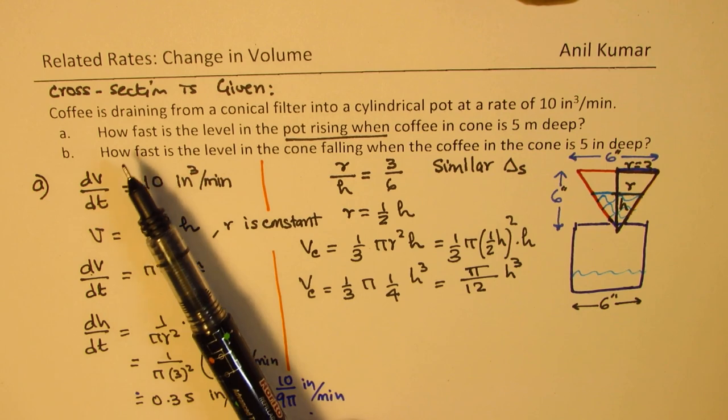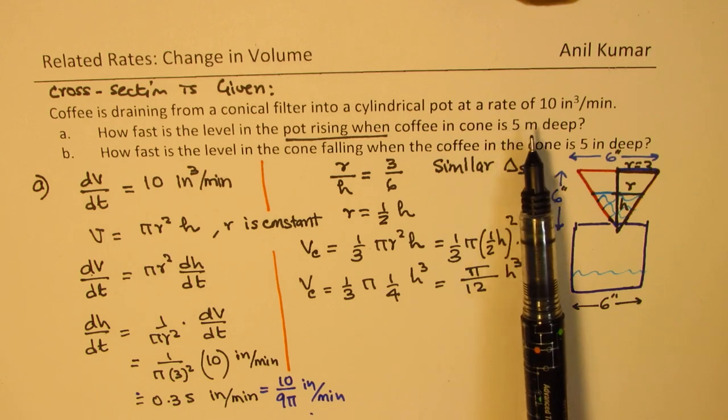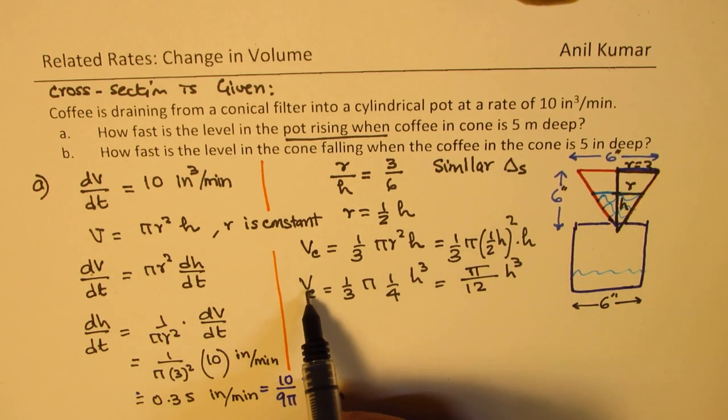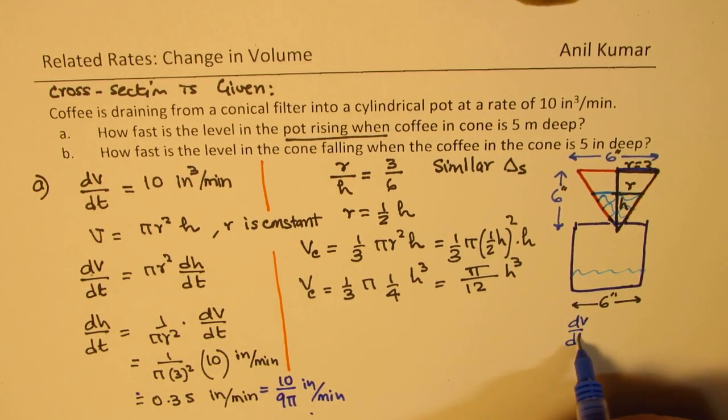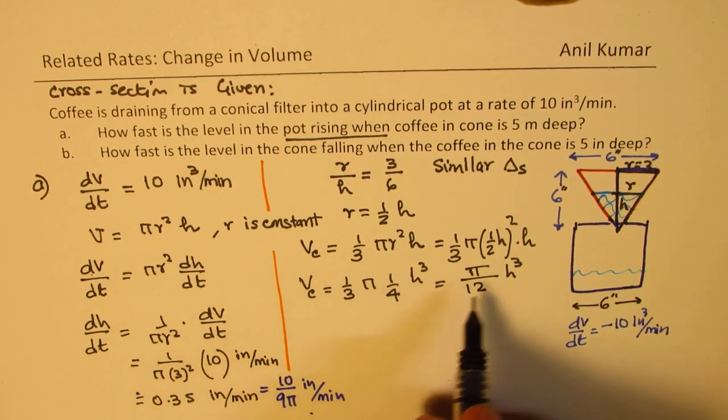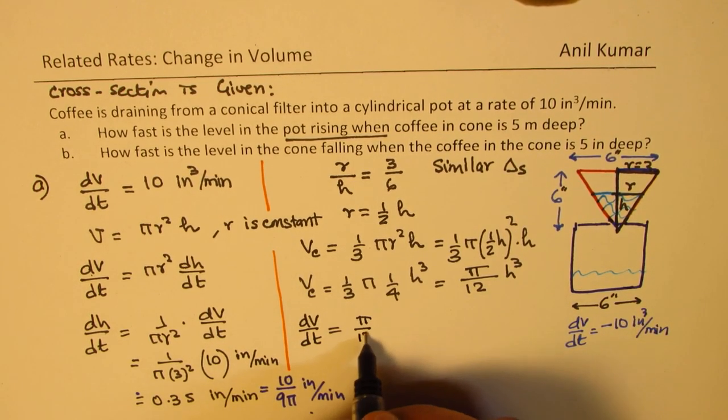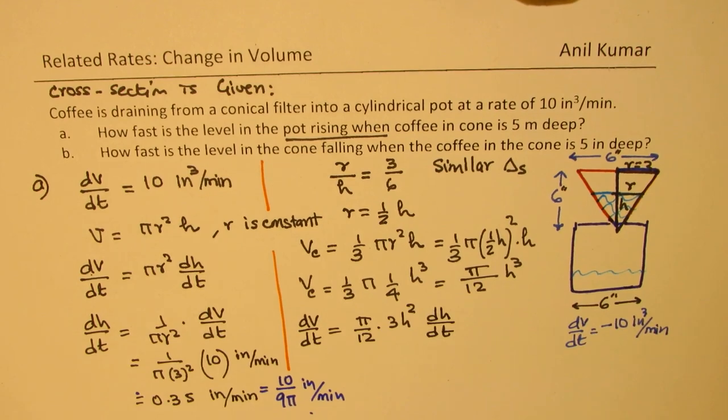Now, how fast is the level of the pot rising when the coffee in the cone is 5 inches deep? Now, when it is 5 inches deep, we know that the change in volume is decreasing. So in this particular case, it is important to note that dV/dt is, because it is decreasing, we will have to take this as negative 10 inches cubed per minute. So if I differentiate now with respect to time, I get dV/dt equals π/12 times 3h² dh/dt.